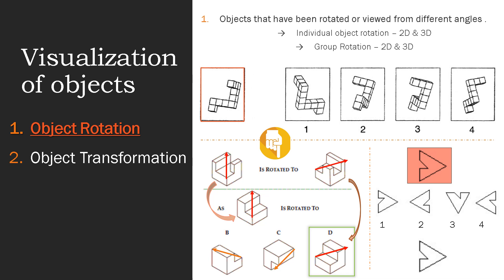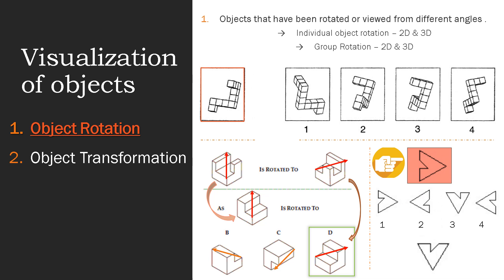Now we have seen 3D object rotations. Let's move to 2D individual object rotations. In the next question we have to find the rotated version of the question figure. Since all the options look similar, let's rotate. In one direction none of the options are matching, but we can see a similarity with option 3, though it is not the same. Moving to the next orientation — it matches with option 4. So option 4 is the answer.